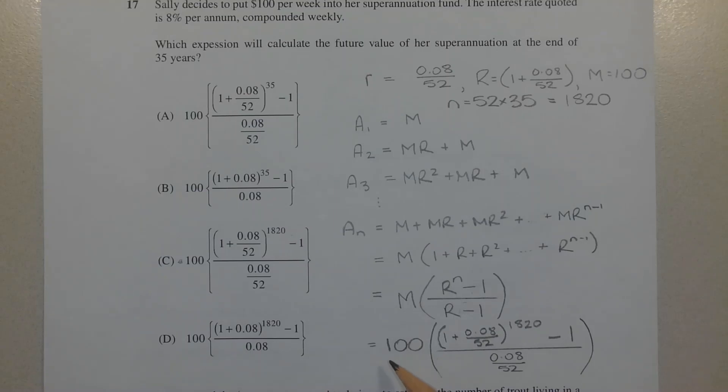So AN equals 100 times [(1 plus 0.08 over 52) to the power of N, which in this case is 1820 (the total number of weeks), minus 1] all over (0.08 over 52). Therefore the correct answer is option C.